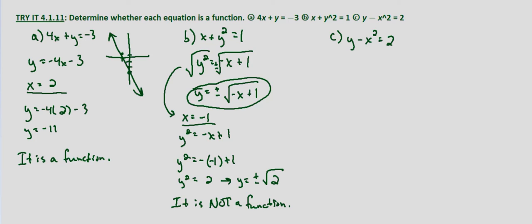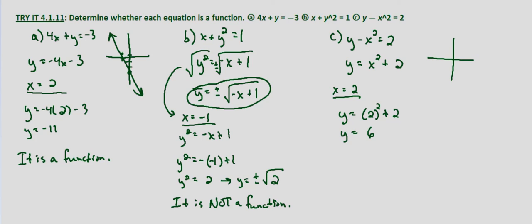With problem C, we have y minus x squared equals 2. Solving for y by adding x squared to both sides, we get y equals x squared plus 2. For any value of x that we put in, we're going to square it and add 2. For example, if x equals 2, then y equals 2 squared plus 2, which equals 6. It's going to be the same for any x value — we end up with just one y value. This represents a parabola, and any place on it where you have an input, you're only going to have one output, which means this equation is a function.